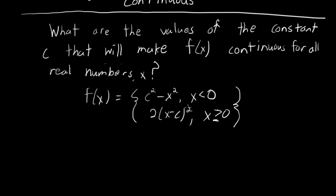So the only potentially problematic point we have is x equals 0, where the limit coming in from the left is going to be dictated by the function c squared minus x squared, and the limit coming in from the right as well as the function value is going to be dictated by the function 2 minus the quantity x minus c squared. We're going to have to pick c such that the left and right limits at 0 are the same and equal to the function value at 0.